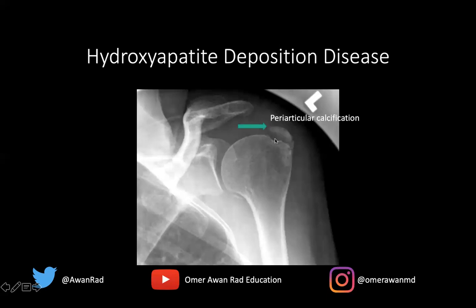Notice that there's a large globular amorphous calcification adjacent to the greater tuberosity of the humerus. This is where the rotator cuff tendons insert — supraspinatus, infraspinatus, and teres minor insert onto the greater tuberosity. So you get amorphous periarticular calcification around the tendons and around the bone where the tendons insert — very characteristic for hydroxyapatite deposition disease or calcific tendinitis.